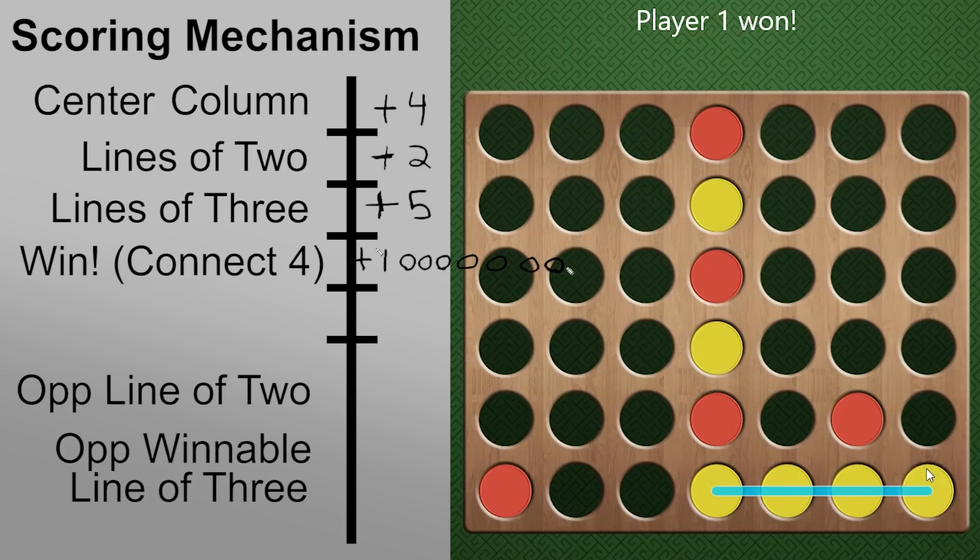Then we have on the opponent side, if we're leaving the opponent with two in a row lines, we'll do a minus two, and if we're leaving the opponent with a three in a row that they can win on the next turn, we'll do minus a hundred so that we always block when we can.